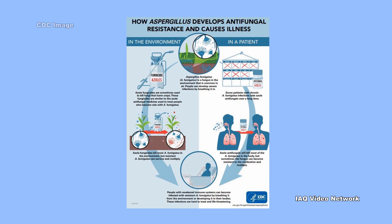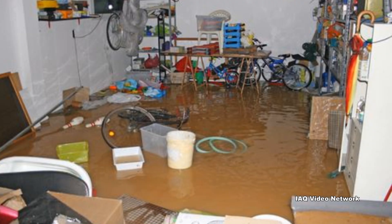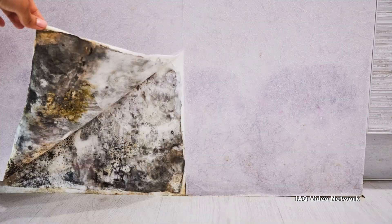Types of Aspergillosis listed by the CDC include allergic bronchopulmonary Aspergillosis, allergic Aspergillus sinusitis, Aspergilloma, chronic pulmonary Aspergillosis, invasive Aspergillosis, and cutaneous Aspergillosis. Indoor environments that have suffered water damage or elevated humidity levels supporting the growth of Aspergillus can be an exposure concern for at-risk building occupants.